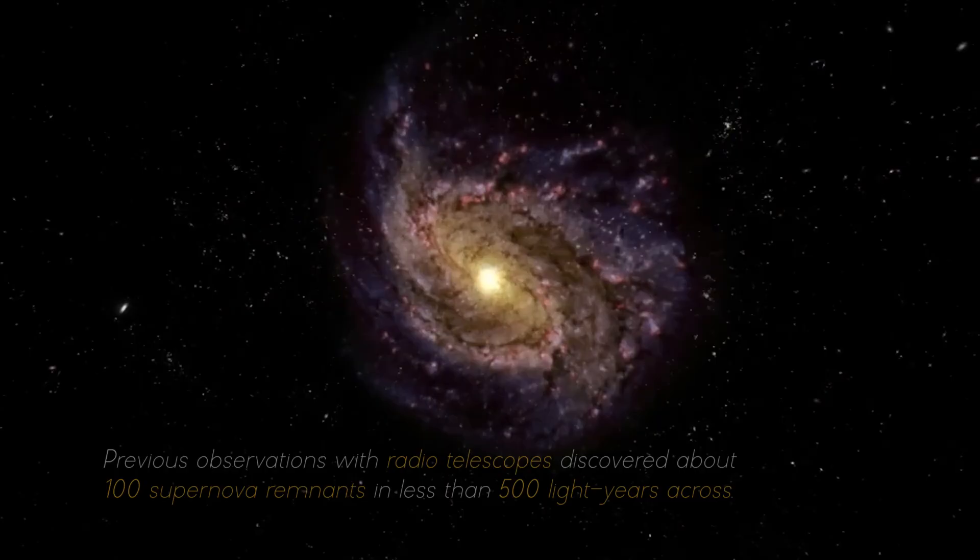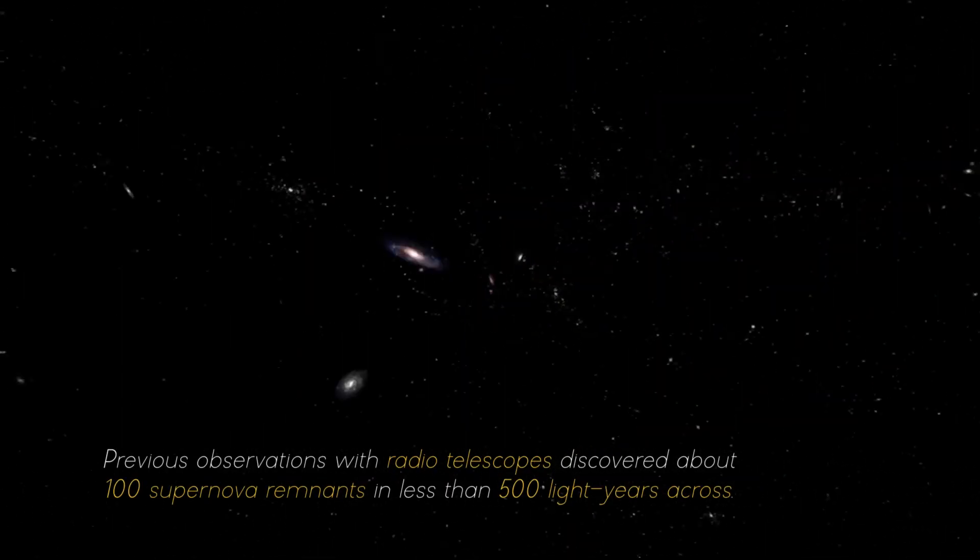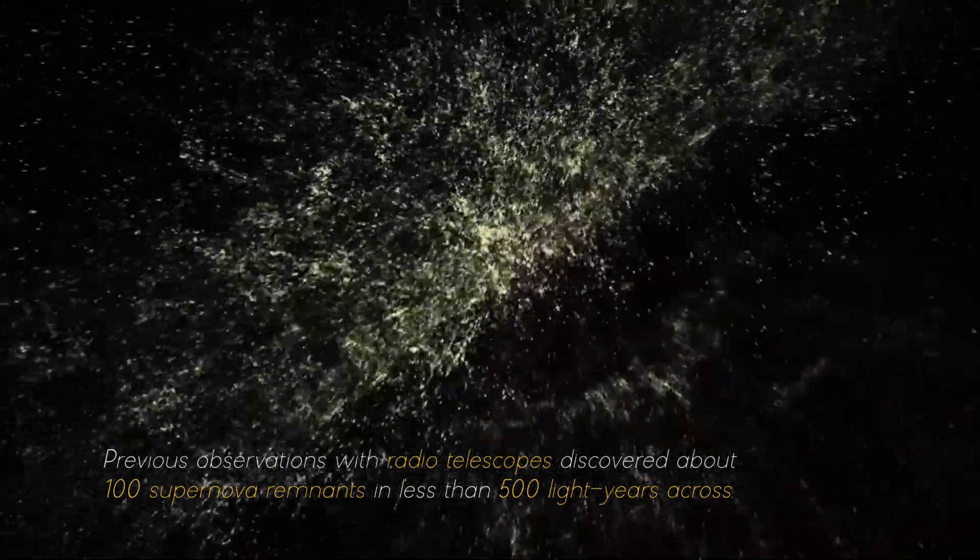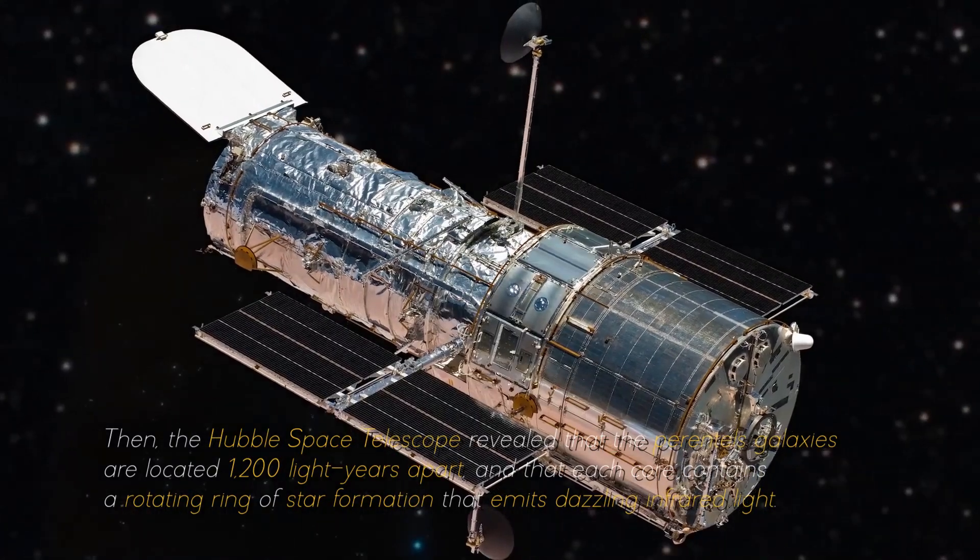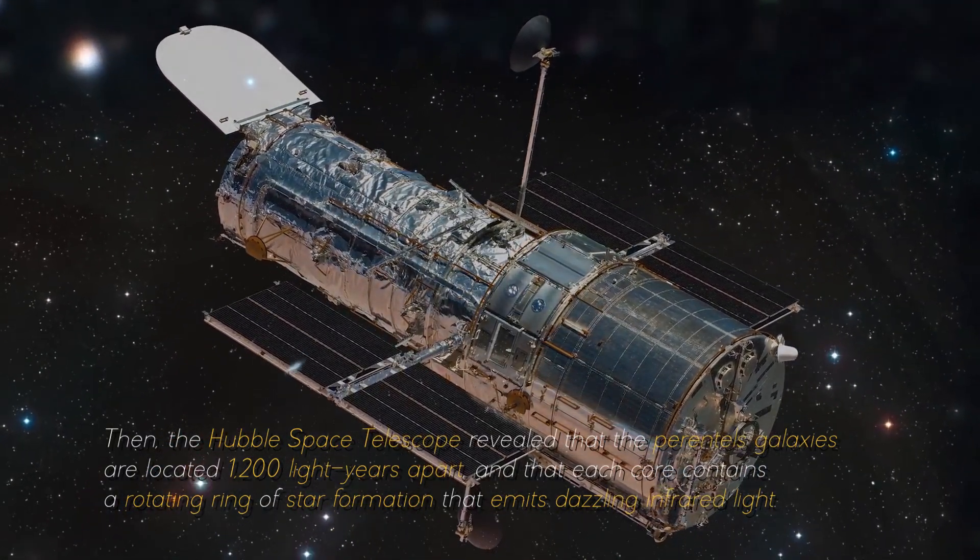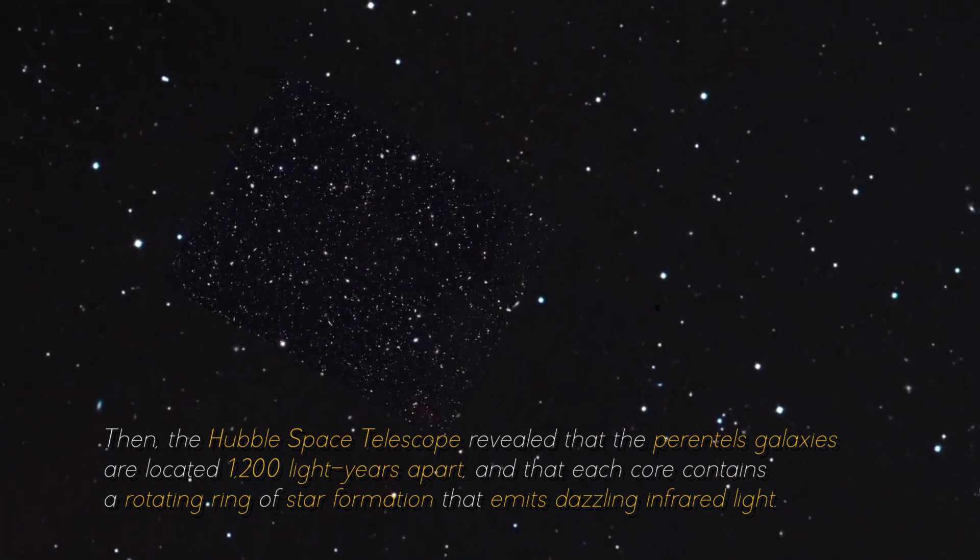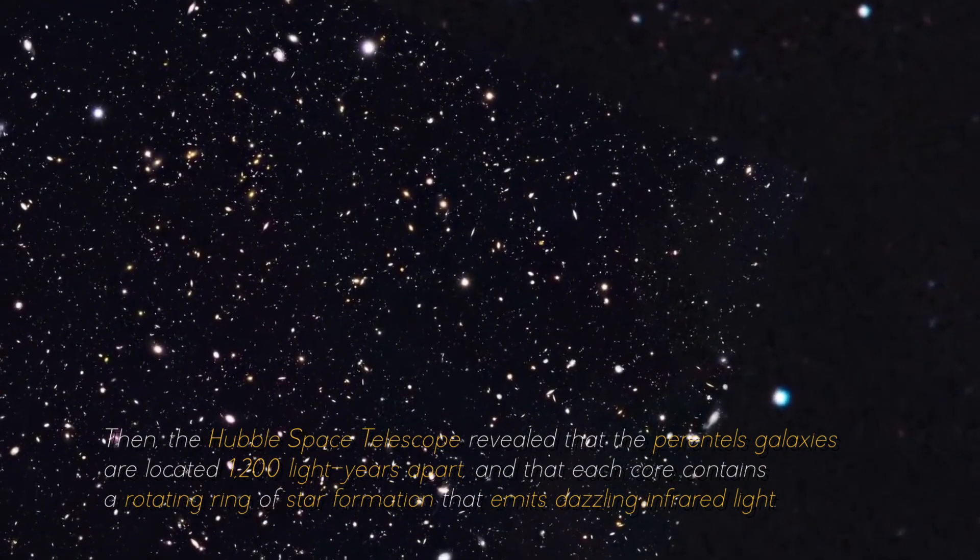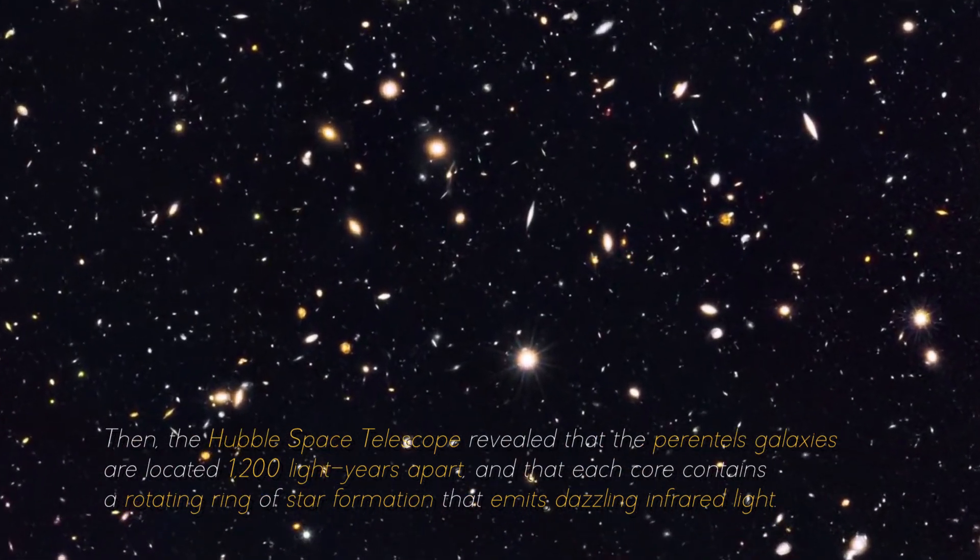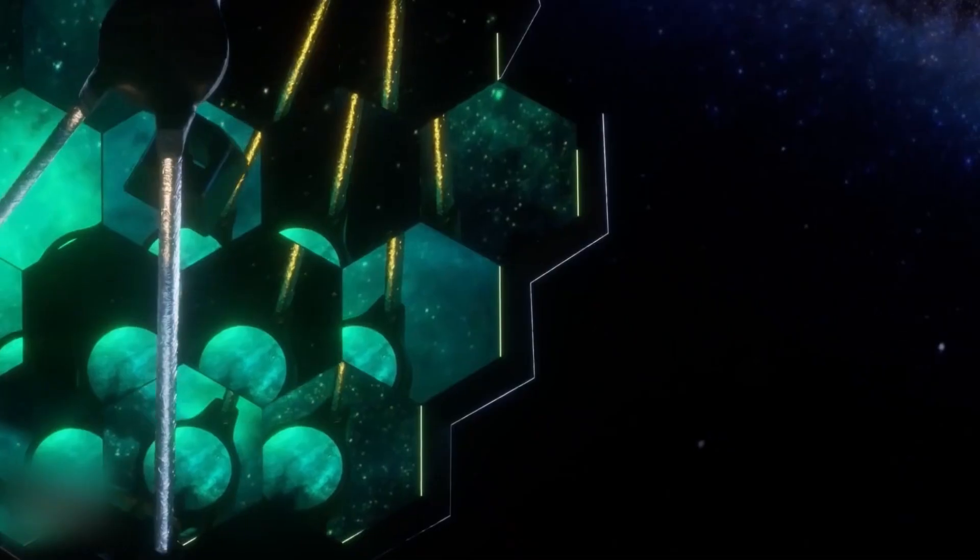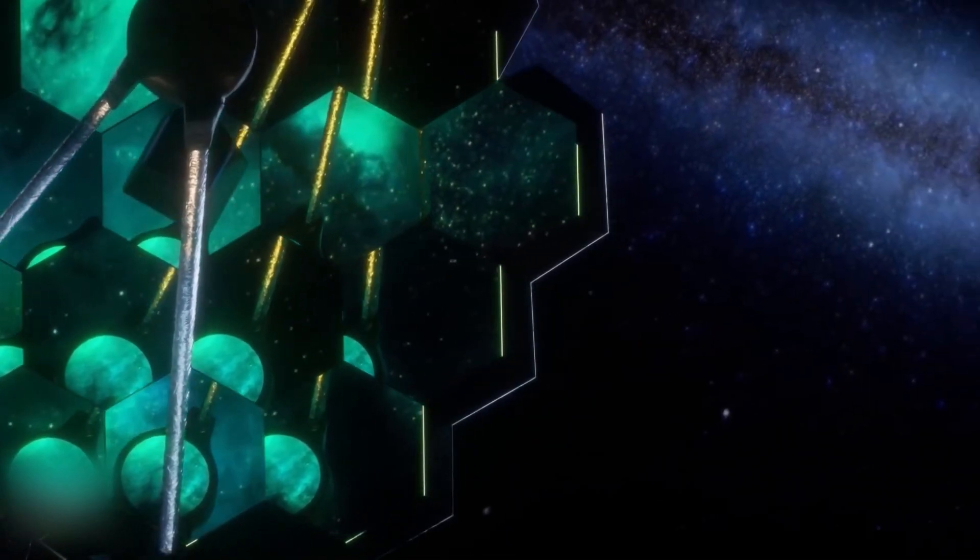Surprisingly, this small area contains as much gas as the entire Milky Way. Previous observations with radio telescopes discovered about 100 supernova remnants in less than 500 light-years across. Then, the Hubble Space Telescope revealed that the parental galaxies are located 1,200 light-years apart, and that each core contains a rotating ring of star formation that emits dazzling infrared light. This latest view from the James Webb Space Telescope shows an impressive galactic merger of the two galaxies.